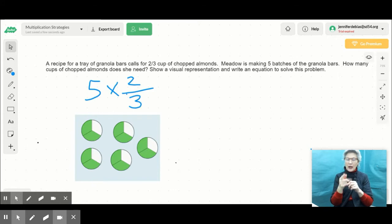So I know that if I multiply a whole number by a fraction, I can multiply the whole number by the numerator, which is 10. And my pieces are going to stay thirds, right? So I get 10/3.